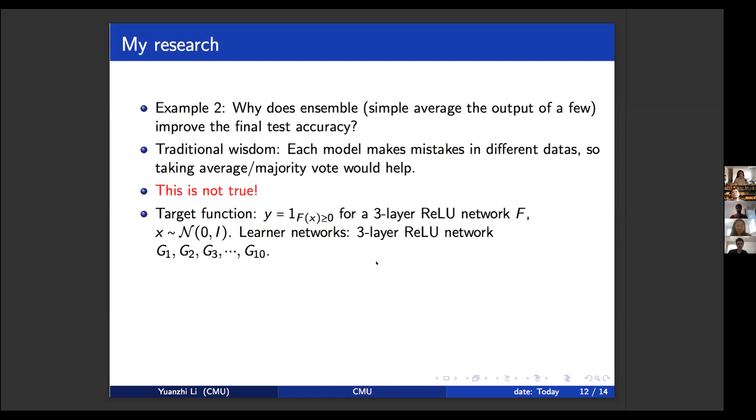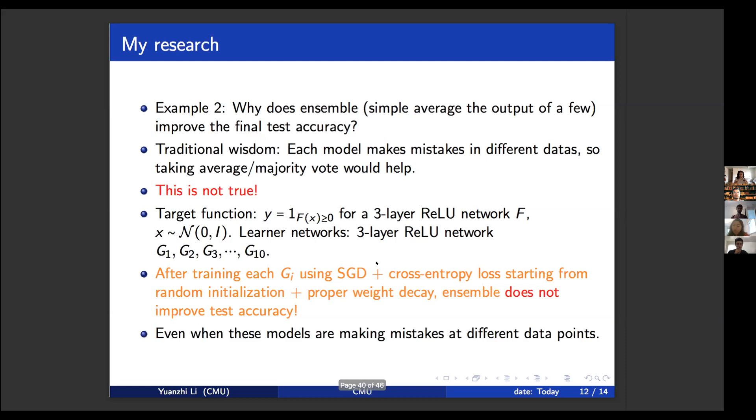For example, you can construct a very simple data set where your target function, you want to decide whether the output of a three layer unknown ReLU network F, whether the output of this network is bigger than zero or not. So this is a classification problem and you have a learner network, which is a three layer ReLU network. You have 10 of them. You can just perform some simple experiments. You will see that if you train each model using SGD starting from random initialization, you use proper weight decay, use cross entropy loss, then ensembling these models does not improve test accuracy. Even when these models are making mistakes at different data points. So, I mean, ensemble does not work unconditionally. You have this data set. You train the neural net and you ensemble. It's not going to work.